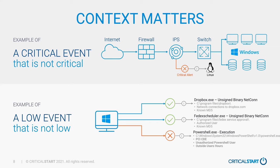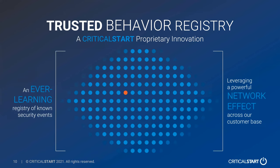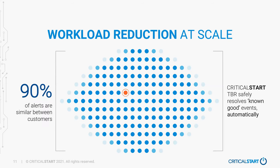When we talk about context in terms of doing great detection, this is what we mean. For us, that comes down to building what we call a Trusted Behavior Registry. This is the key to really good MDR services — an ever-learning registry of security events that we leverage across multiple environments. This gives us a very powerful set of known good behaviors because people are using common tools across different environments — Outlook, Word, Excel, QuickBooks, SAP, Oracle. Known good activity from one environment to another has as much as 90% overlap.